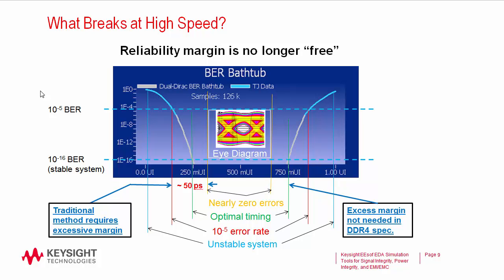At DDR4 speeds, you no longer have the luxury of assuming that the bathtub curve is a brick wall, infinitely steep. So the question is, how does it roll off? You can measure a 10 to the minus 5 simulation — this blue part here — and then attempt to extrapolate using this grey curve here, which is the dual Dirac extrapolation. But we're extrapolating over 11 orders of magnitude.